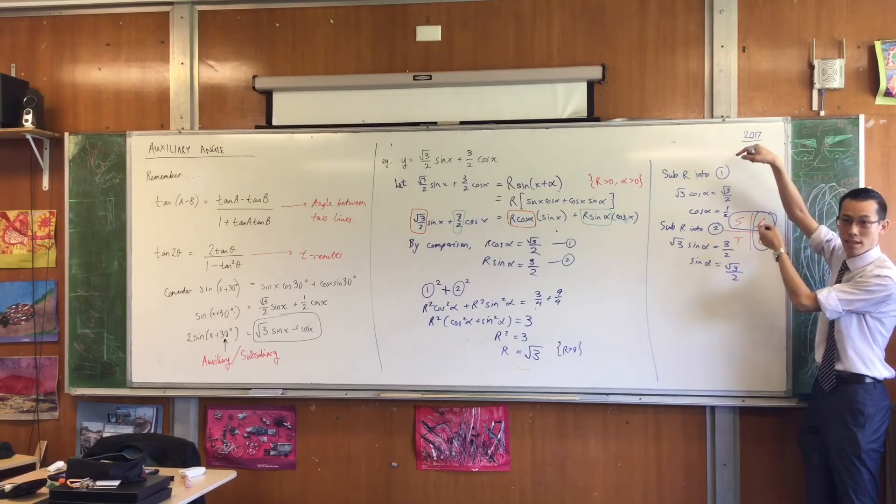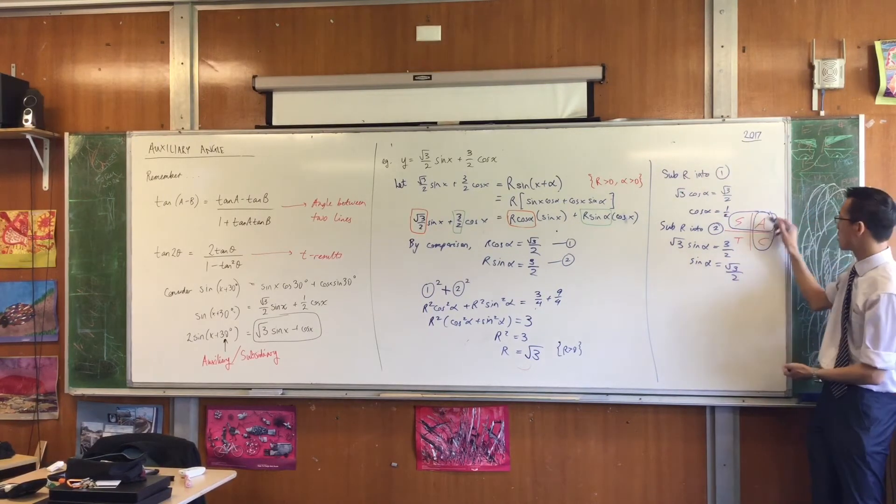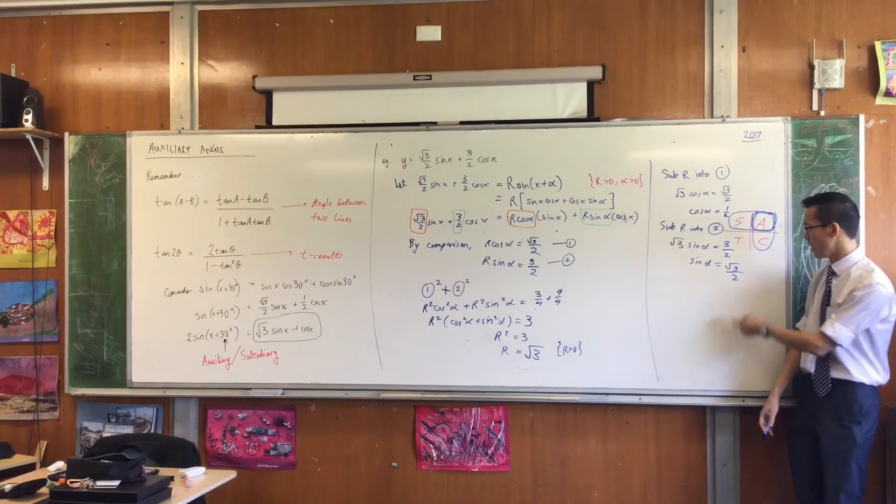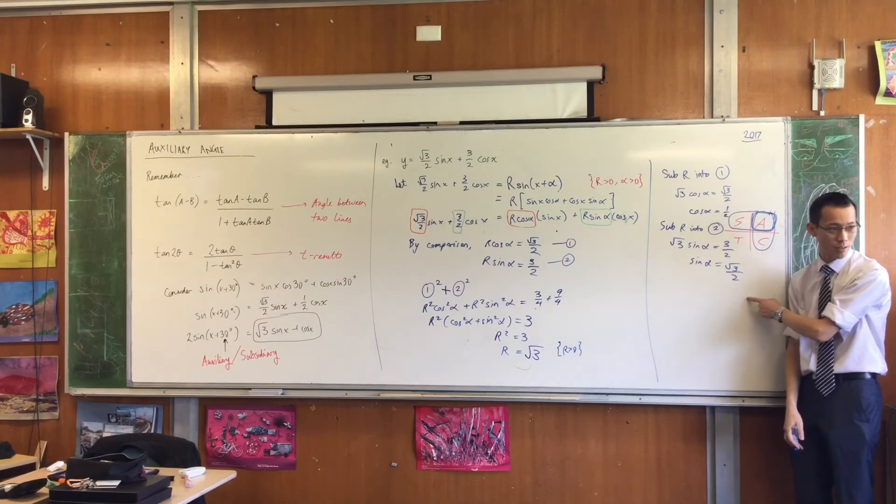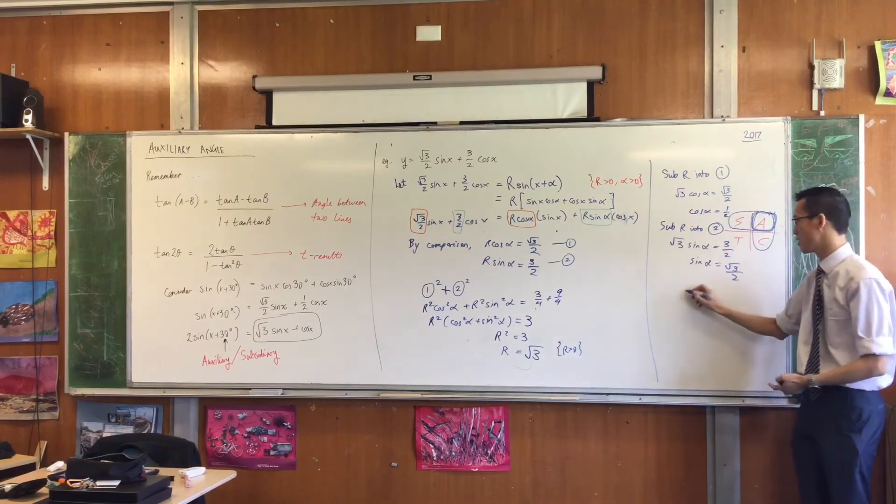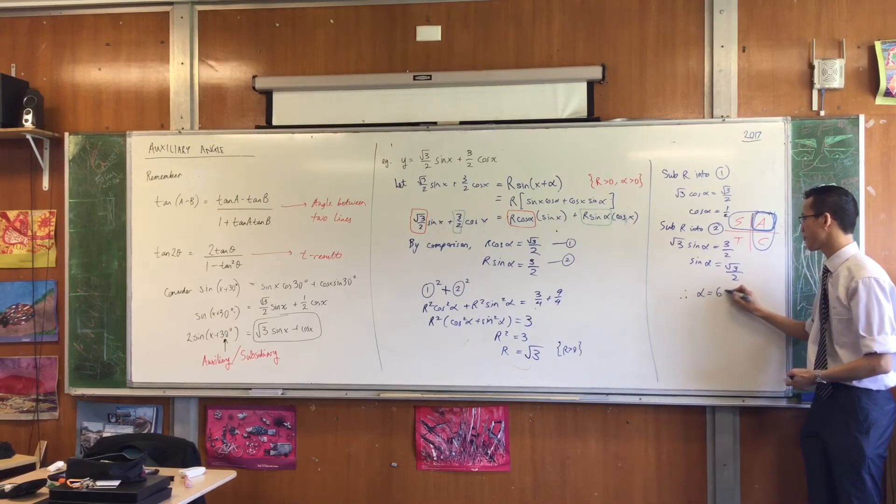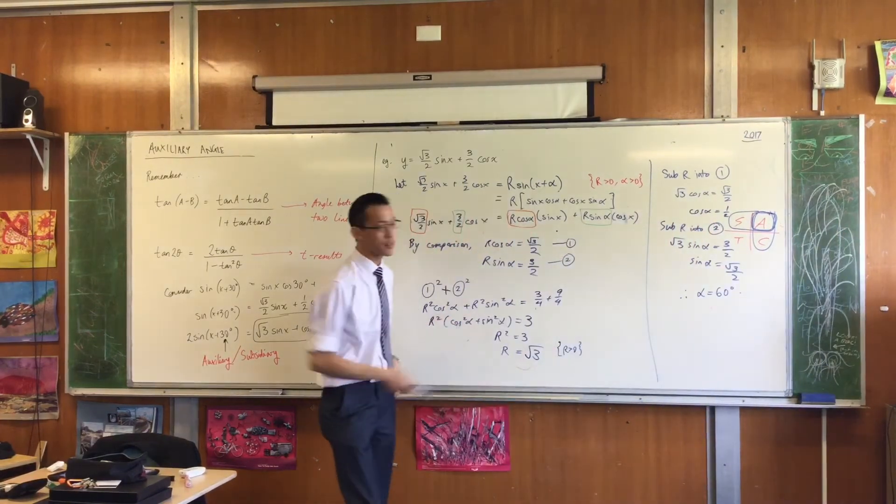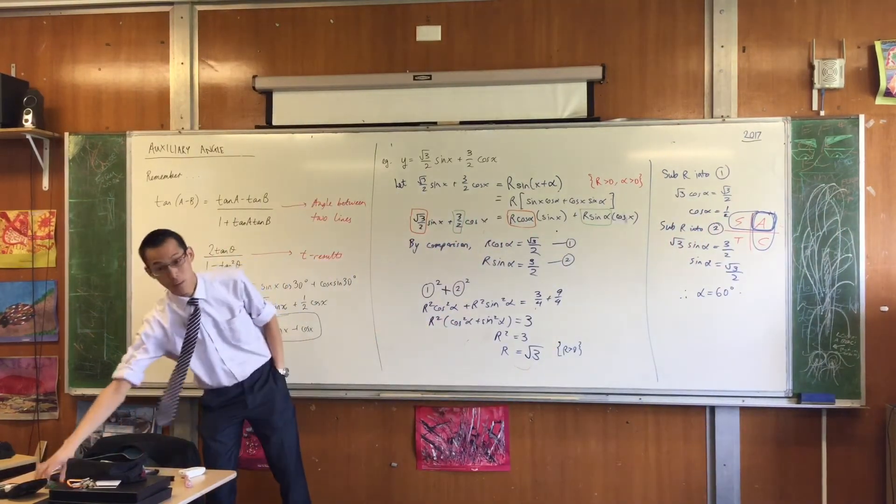And you have to simultaneously satisfy both of them, right? So that's why you've got to be in here. That 300 degrees that you found satisfies this but not this one, right? So therefore, with both equations, I can say alpha equals 60 degrees, okay?